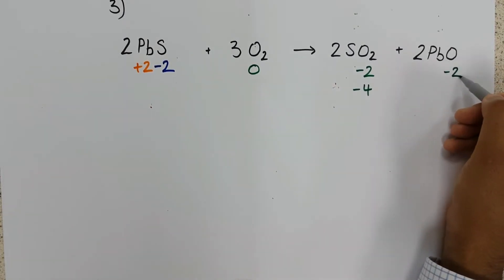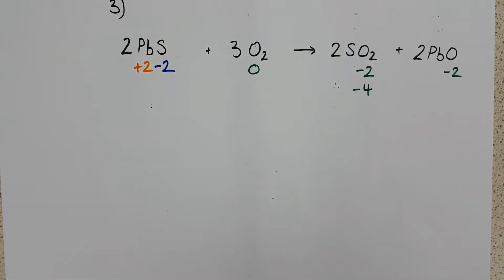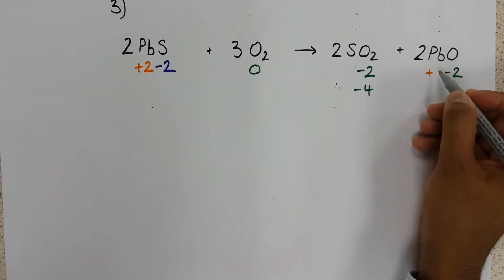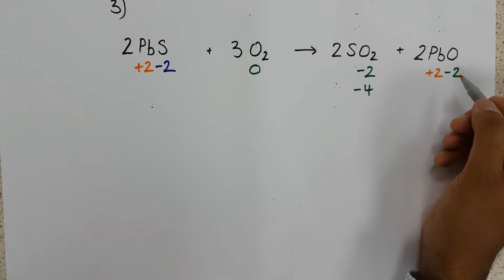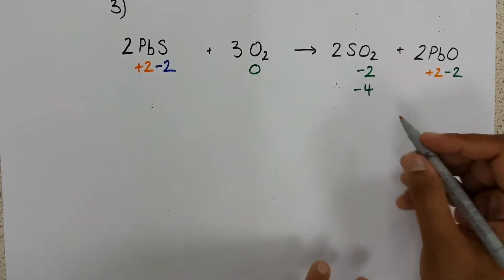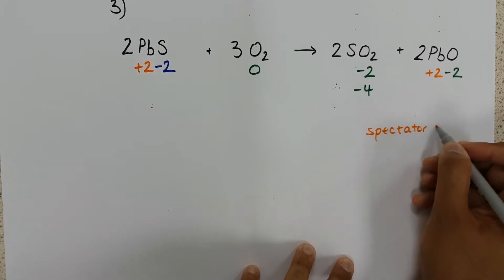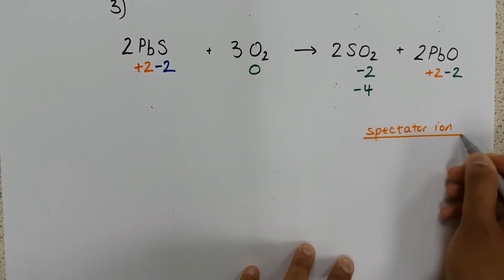Two oxygens makes minus four. And again, we have a minus two over here. Our lead in lead oxide must still be a plus two. Therefore, we can comfortably say our spectator ion is Pb2+.